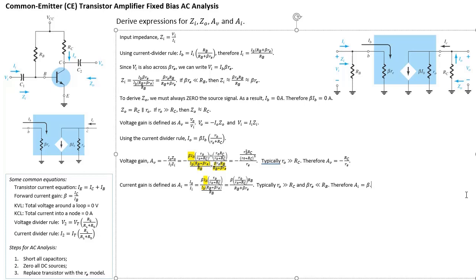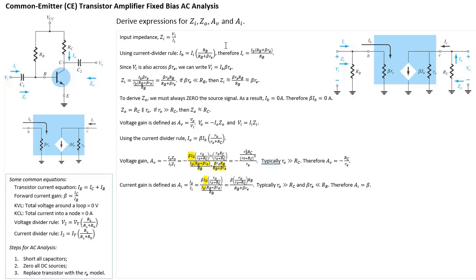Hopefully this gives you an idea of how to do a full AC analysis on a typical CE amplifier. To recap: convert your initial circuit into an AC equivalent by doing those three steps. Then work out expressions for II, IO, ZI, and ZO. Once you have those four things, you can work out AV and AI. Thanks for watching.